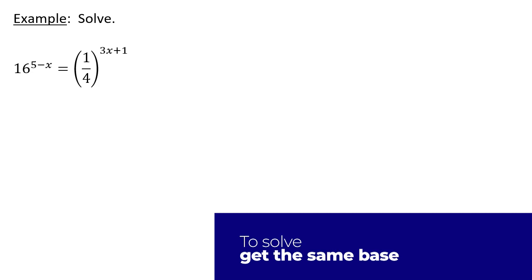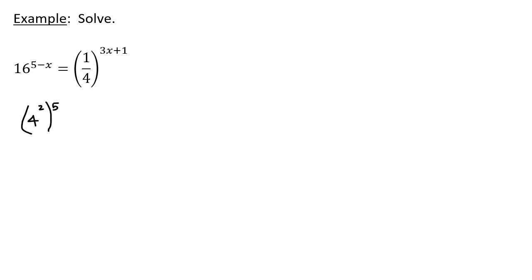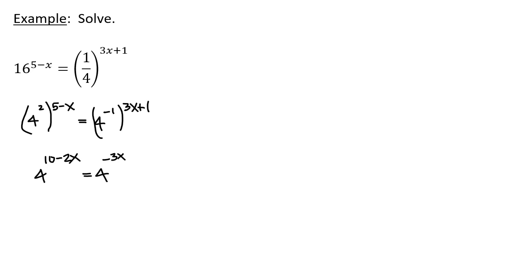This is equivalent to 4 squared to the power 5 minus x equals 4 to the power negative 1 to the power 3x plus 1. So this becomes 4 to the power 10 minus 2x equals 4 to the power negative 3x minus 1.